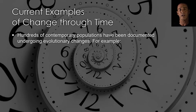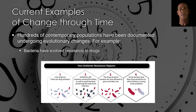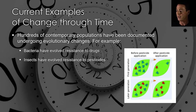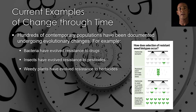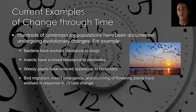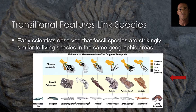Biologists have documented hundreds of populations that are currently changing in response to changes in their environment. Bacteria have evolved resistance to drugs in the time it takes to finish an antibiotic prescription. Insects have evolved resistance to pesticides in the short time since humans began using them. Weedy plants have likewise evolved resistance to herbicides. And bird migrations, the emergence of insects, and blooming of flowering plants have evolved in response to climate change.